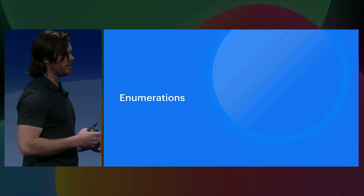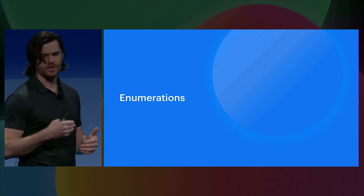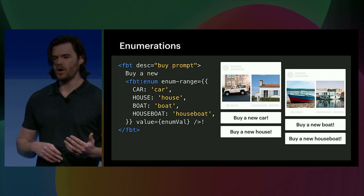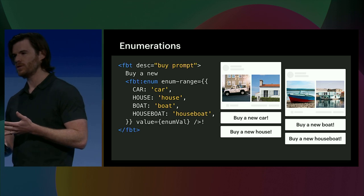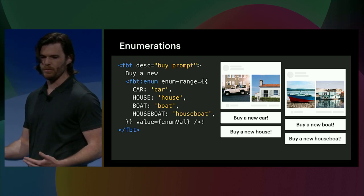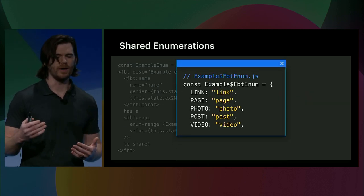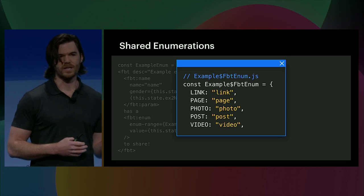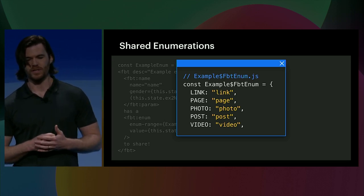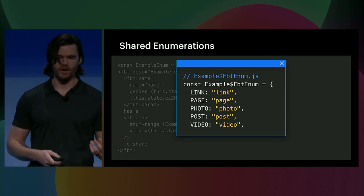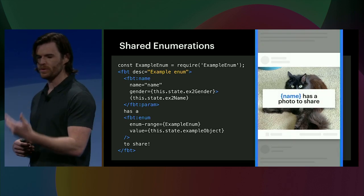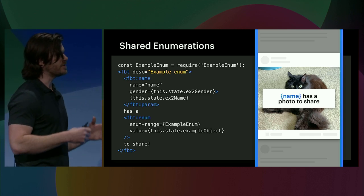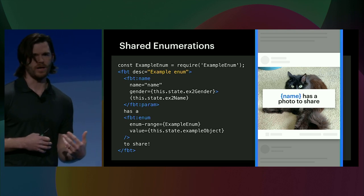Finally, we also provide a way to enumerate your strings. Enumerations provide a way to construct identical sentences where only a select portion of the sentence changes. In this example, we're creating four separate strings with the call to action of purchasing a car, house, boat, or houseboat. It's also possible that certain enumerations are so common that it makes sense to share them in other parts of the codebase. The FBT framework enables this with predefined FBT enums declared in separate files — here we're generating five different strings of the form 'Name has a link to share,' 'Name has a page to share,' et cetera. These enums are preferable to using interpolation because a sentence like 'Name has an object-type to share' doesn't translate well, since oftentimes the inner strings necessitate changes to the outer strings depending on the grammar case of that locale.